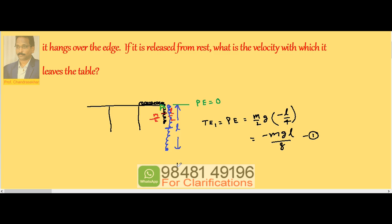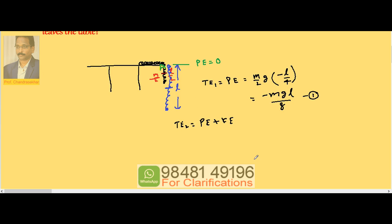So let us take TE₂. Now TE₂ becomes equal to potential and also kinetic, since it has velocity as well as potential energy. So hanging part is mg, weight l is the length hanging, so center of mass from point A is minus l by 2, plus let v be the velocity gained by the mass m, half mv².